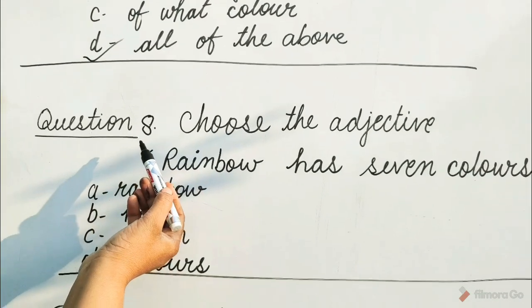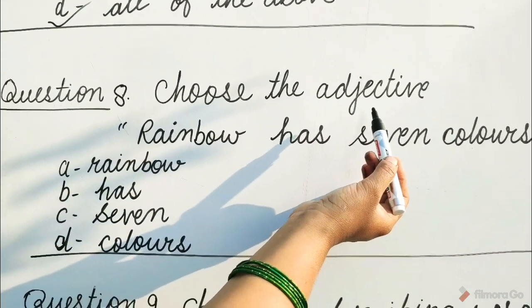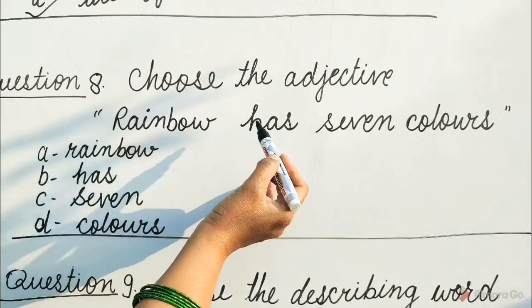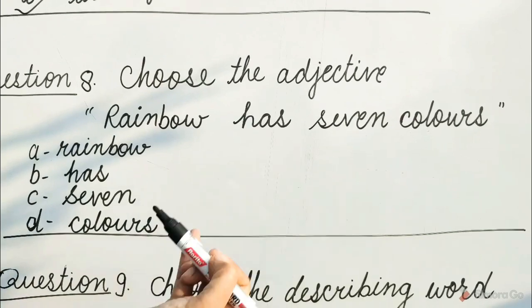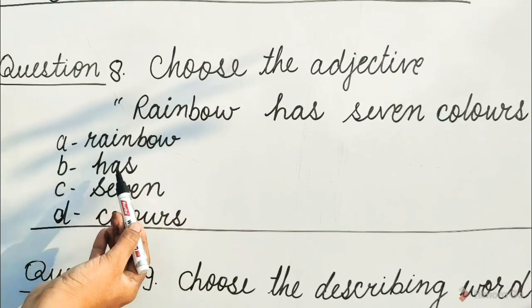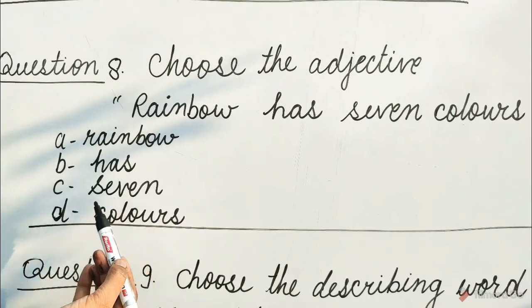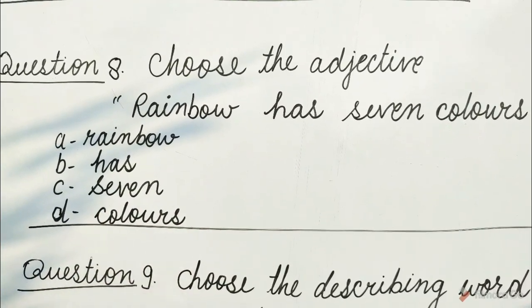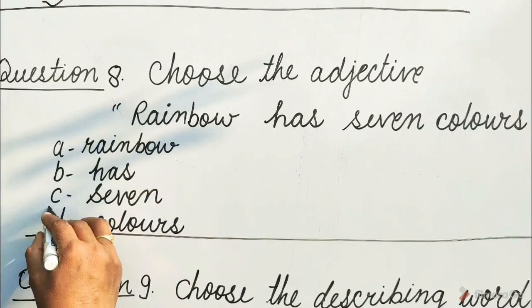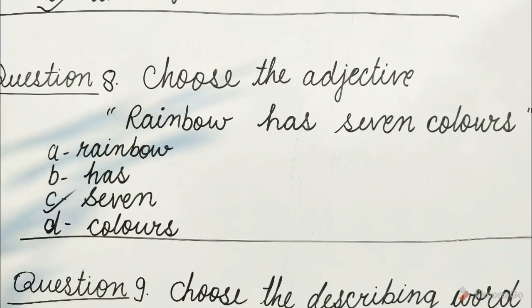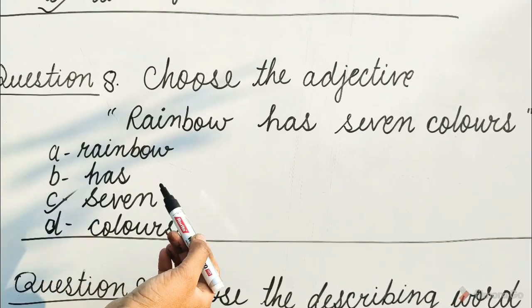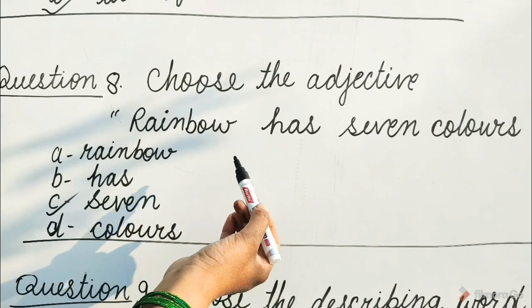Question 8: Choose the adjective. Sentence: Rainbow has 7 colors. Options are A. Rainbow, B. Has, C. 7, D. Colors. Guess children, which option will be correct? Yes, it is C option — 7. Because 7 represents the quantity of colors.